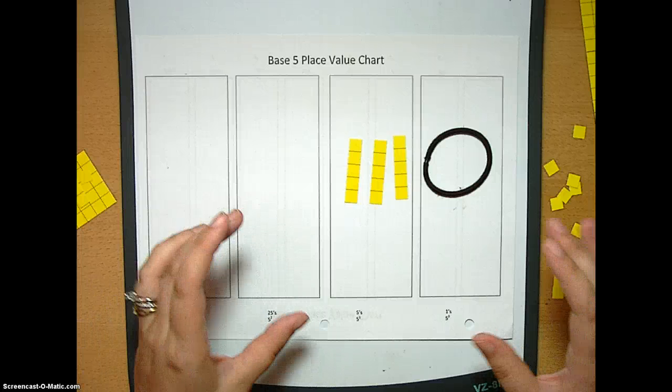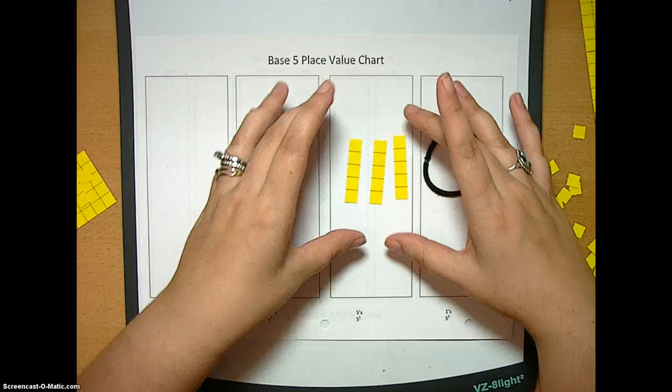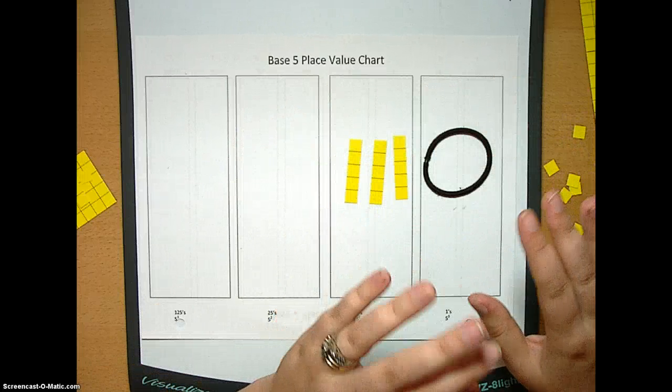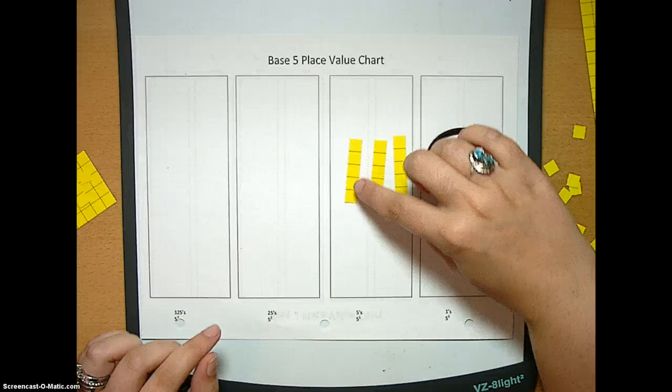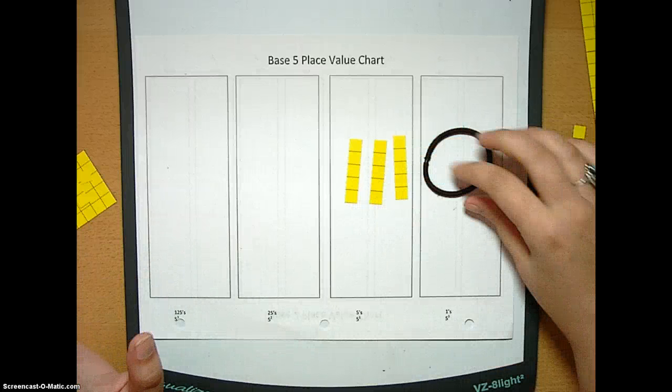So when you're looking at this, this is just like the pencils. We have three groups of five. Okay. You can even count them. One, two, three, four, five. Awesome. Great. Okay. Let's go again.